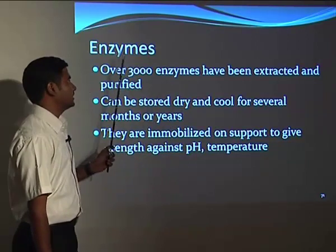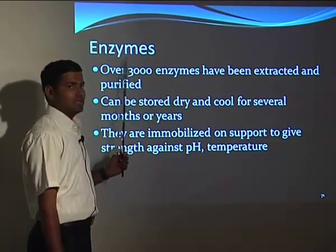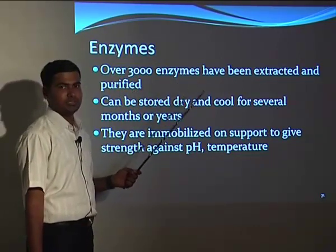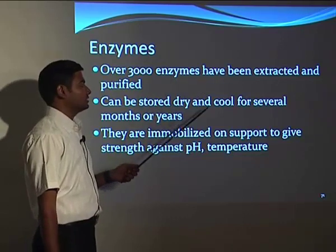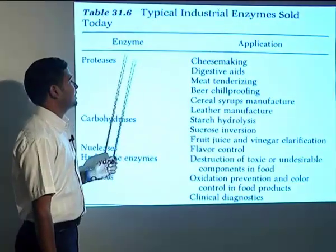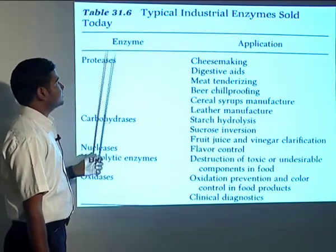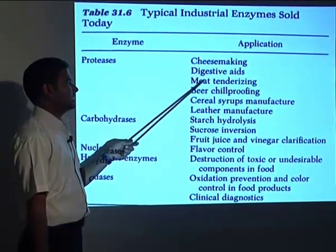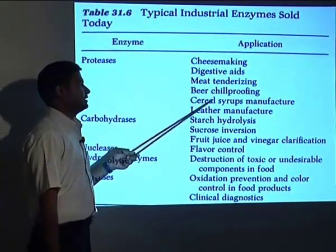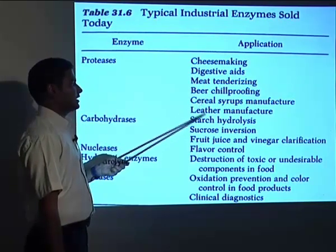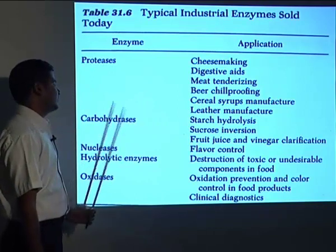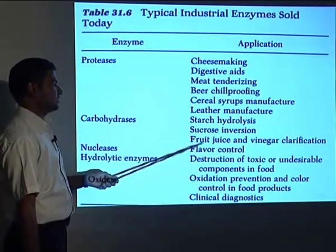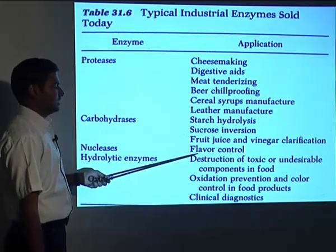Bacteria secrete enzymes into solution, and those enzymes can be separated. Protease is secreted and is used in cheese making, as a digestive aid, in meat tenderizing, beer chill-proofing, cereal syrup manufacturing, and leather manufacturing. Another important enzyme is carbohydrase, used for starch hydrolysis, sucrose inversion, fruit juice and vinegar clarification, and flavor control.